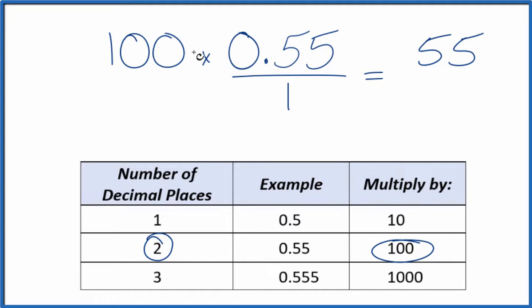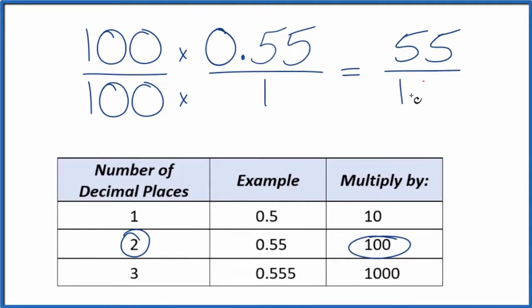But we can't just multiply the numerator. We also need to multiply the denominator by 100, because 100 over 100, that's just 1. So we're multiplying by 1. We're not changing the value, just the way we represent that. So 100 times 1, that is 100.